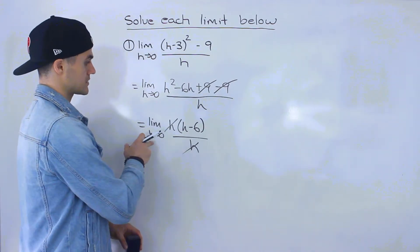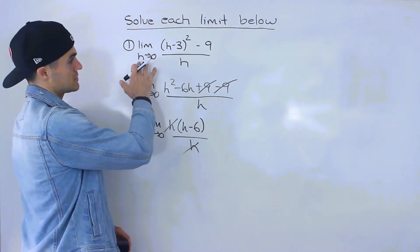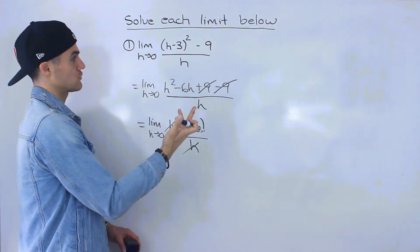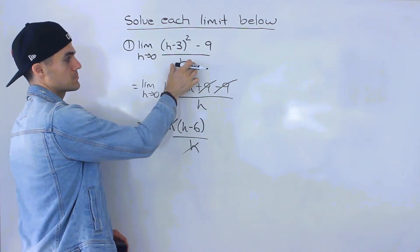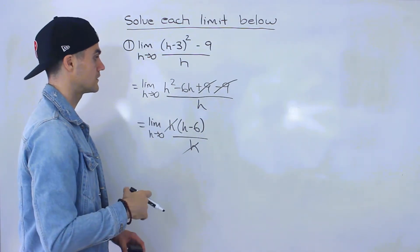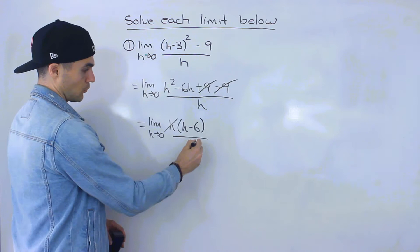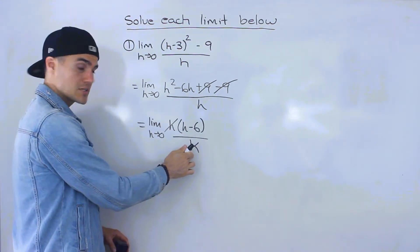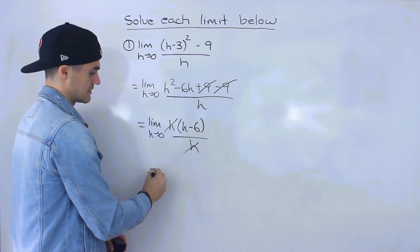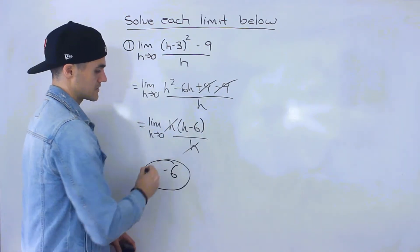So now we could sub in zero for h. Actually that's one thing I forgot to mention at the beginning. Notice that at the beginning we can't make a direct substitution. We can't sub in zero for h because that denominator is going to be zero. That's why we have to use some kind of method to find this limit. But once the h's cancel out once we cancel out that h from the denominator we could sub in zero for h zero minus six. That just gives us negative six.